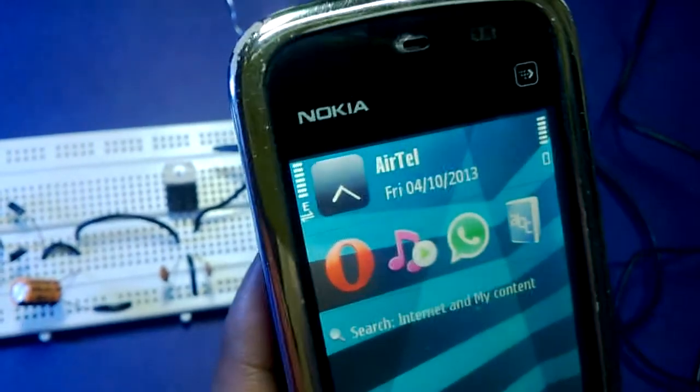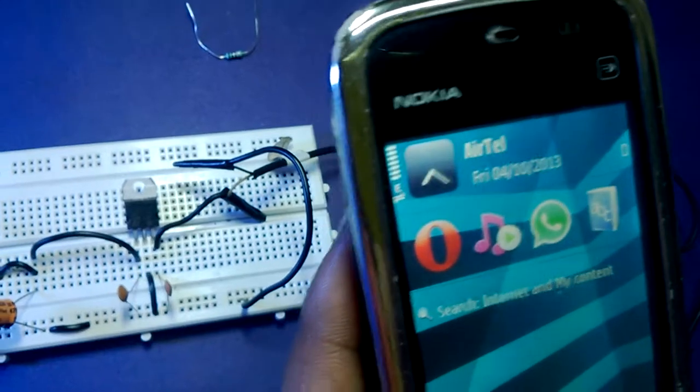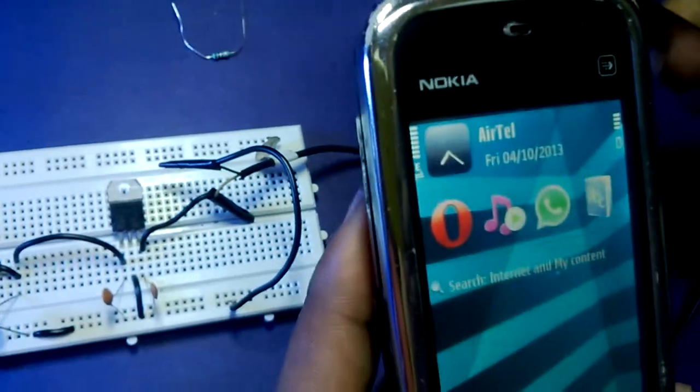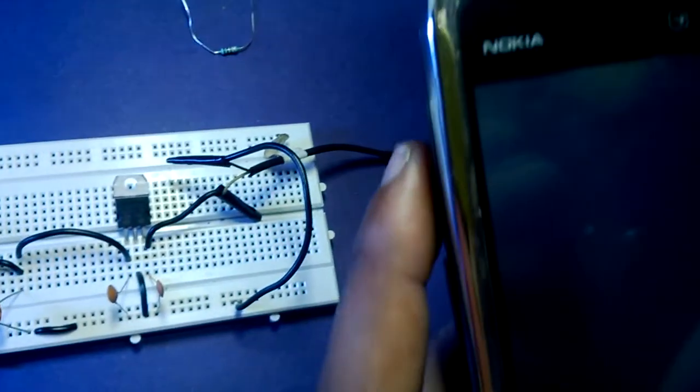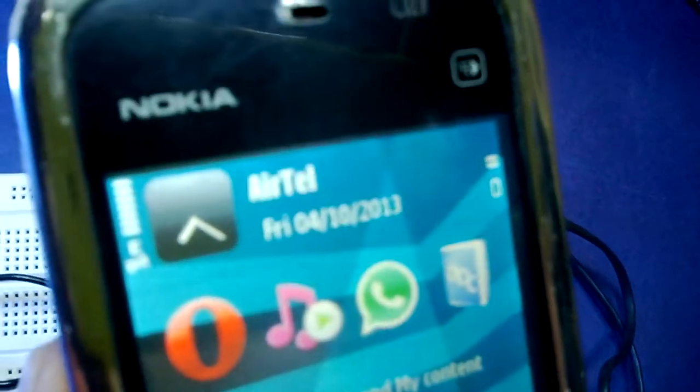This is what we have learned in this tutorial, and I hope you learned how to make a 5-volt mobile charger. You can see this mobile is being charged. The Nokia cell phone is getting charged with this output voltage.